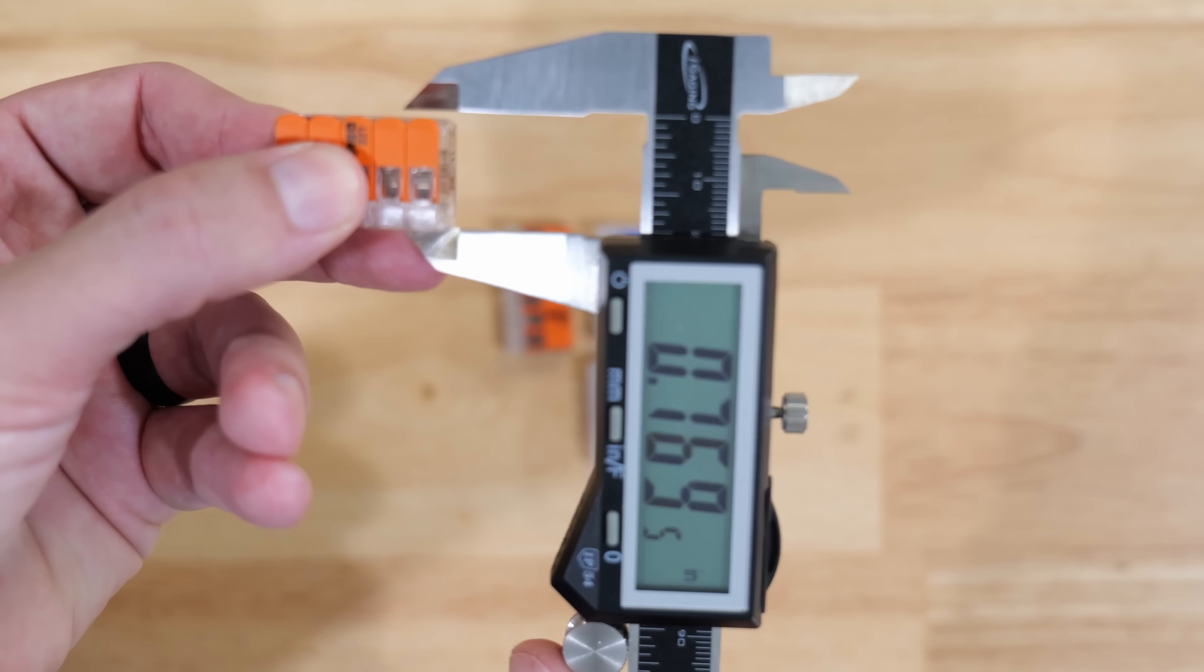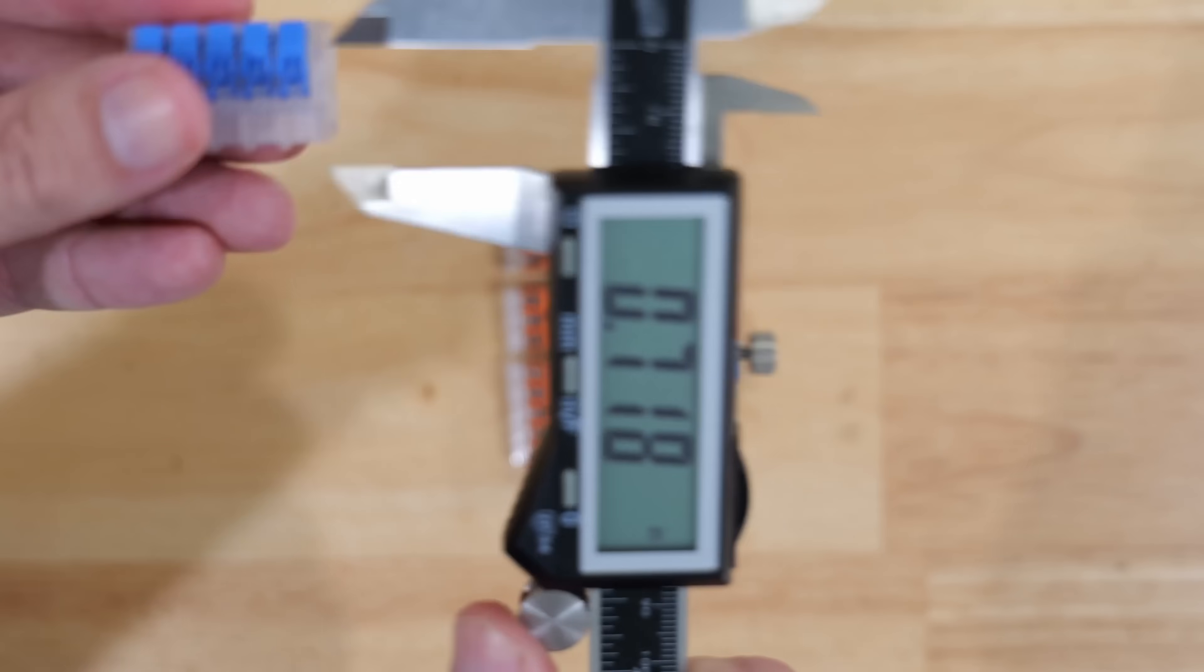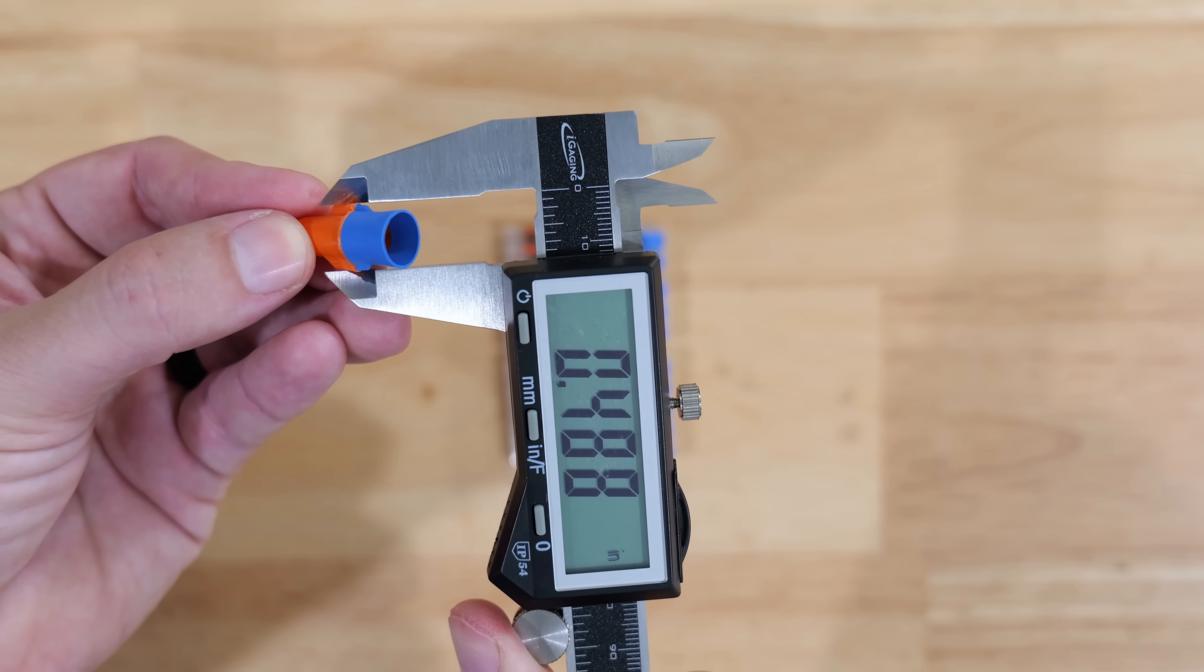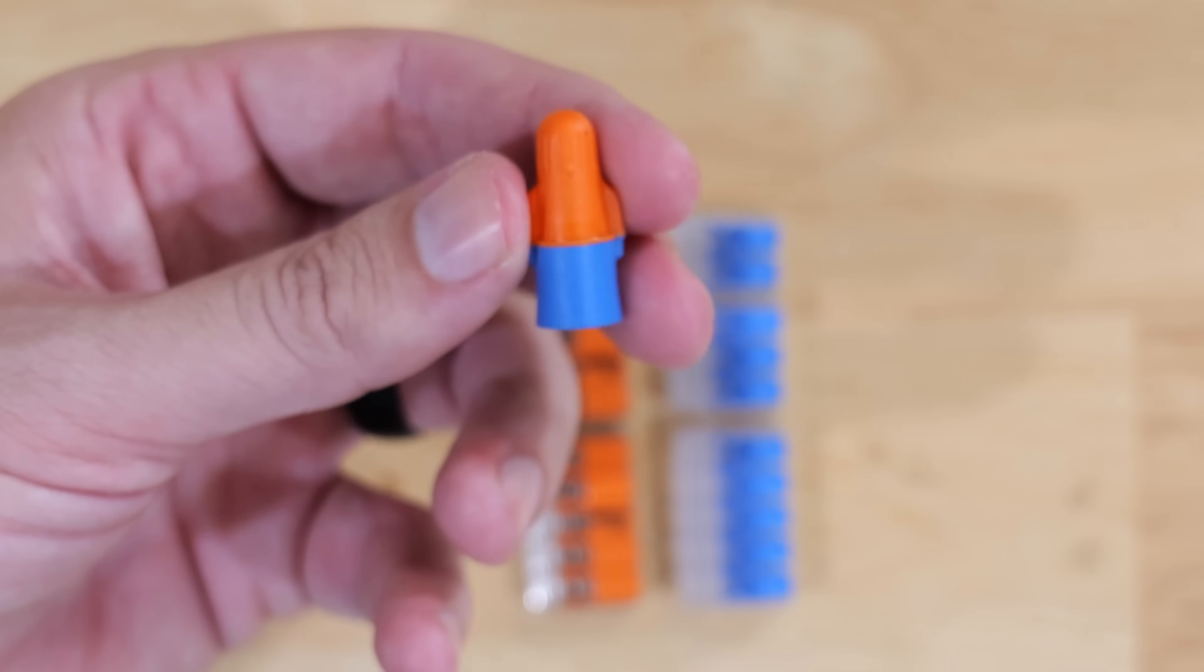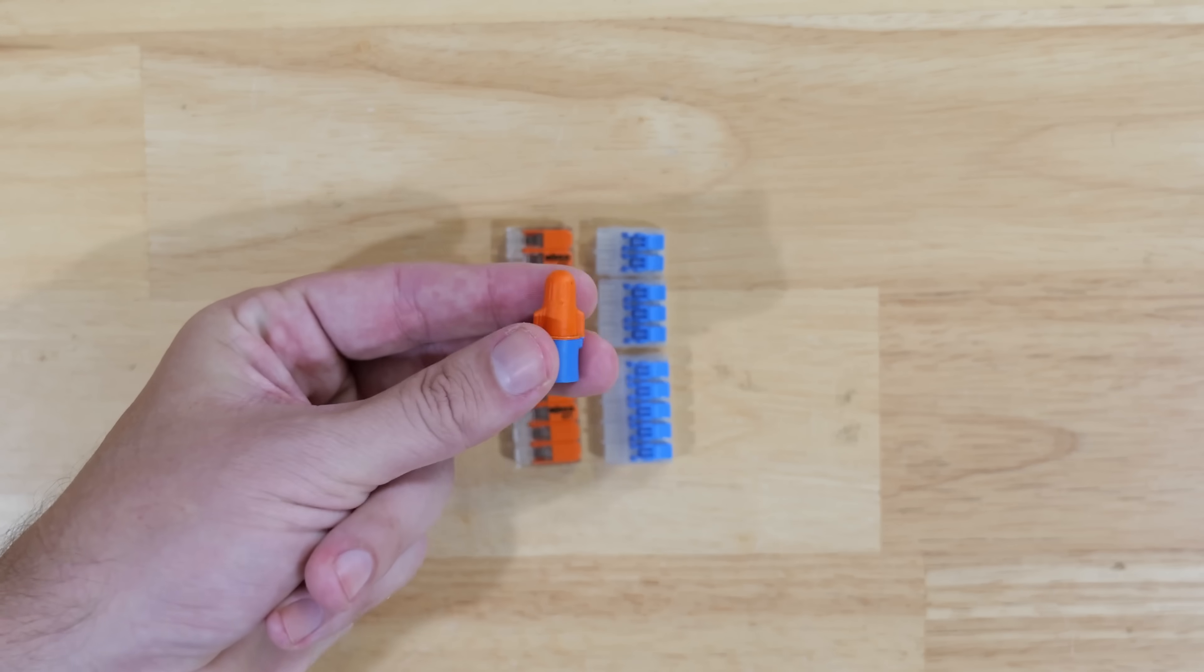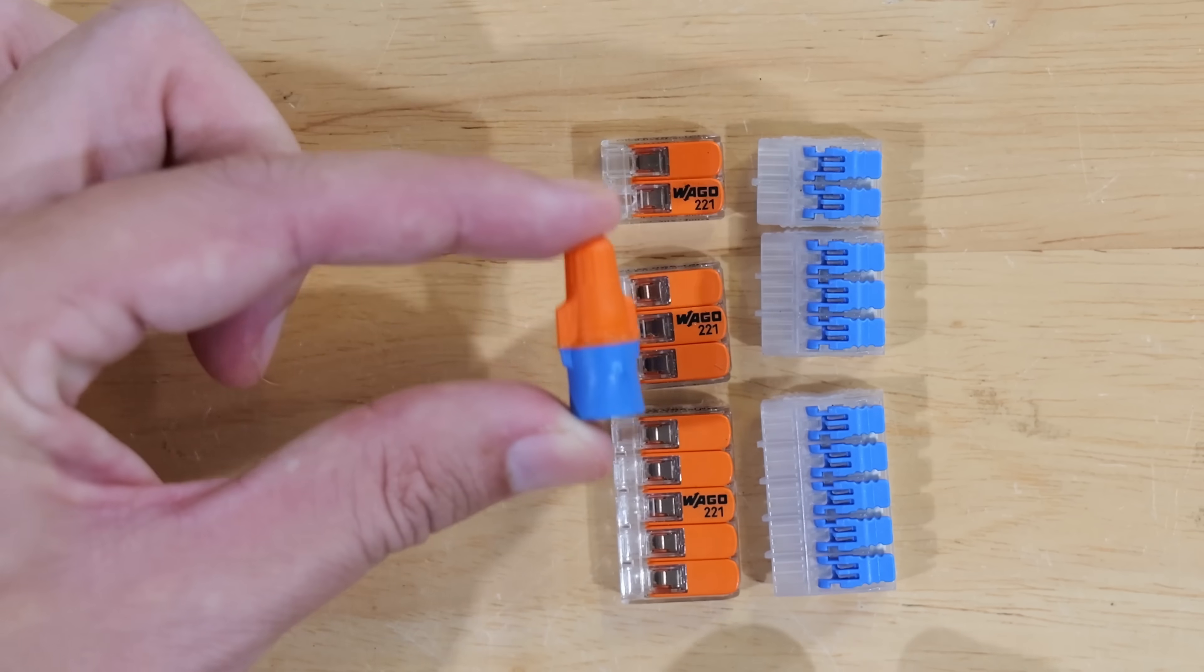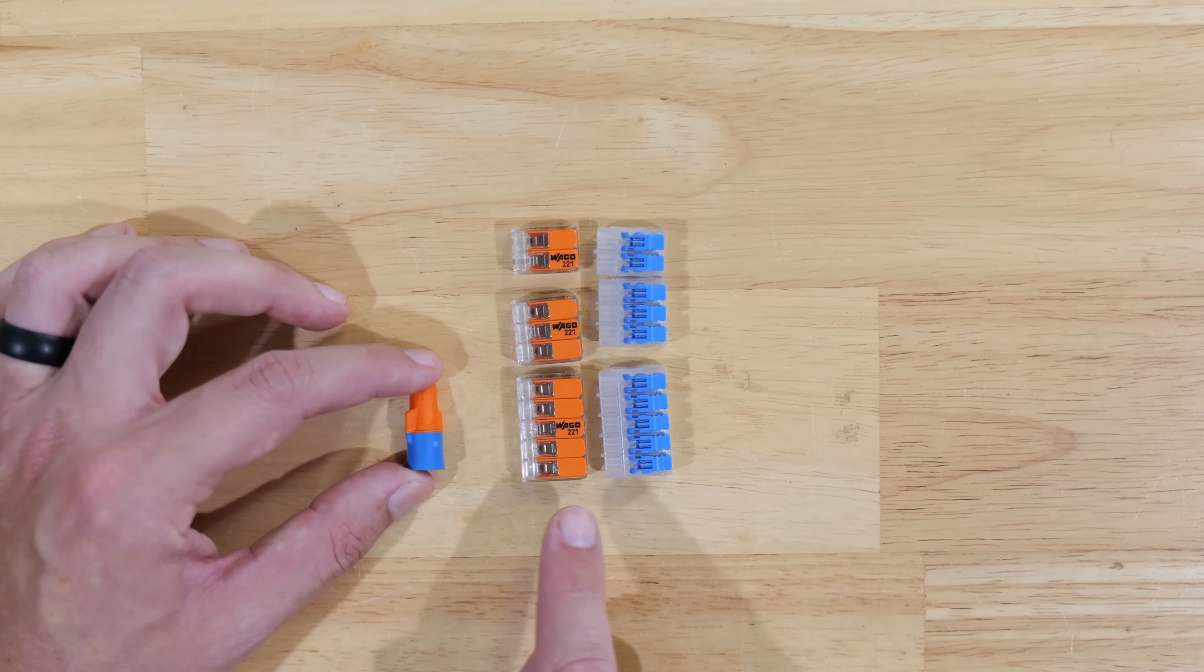The 3M Performance Plus wire nut is the shortest in length. But now let's take a look at the width of each one of them. Starting off with the WAGO, we're right at 0.71 inches. The Ideal Ensure lever nut is 0.73 inches. And the widest part of the wire nut, which is the wings on each side, is right at 0.48, under a half of an inch. The width of this 3M Performance Plus wire nut is much less than both the WAGO and Ideal lever nuts, almost by a quarter of an inch.